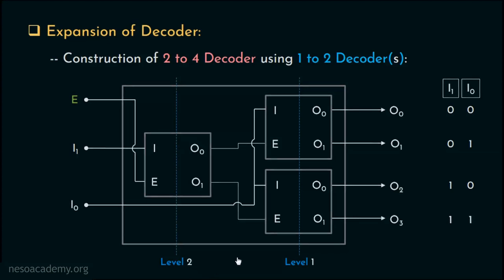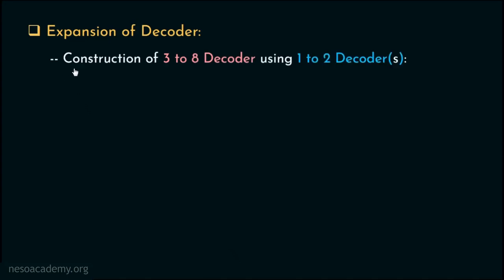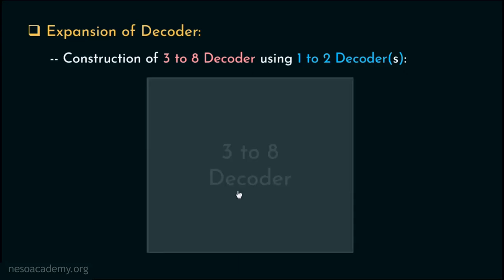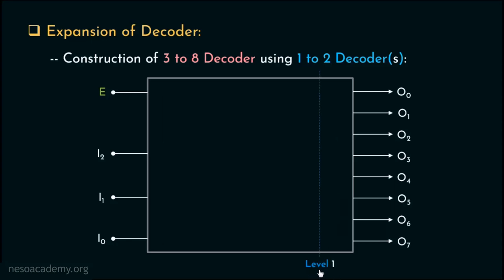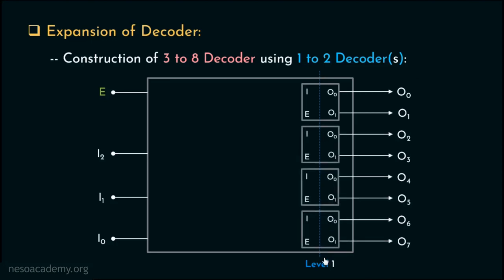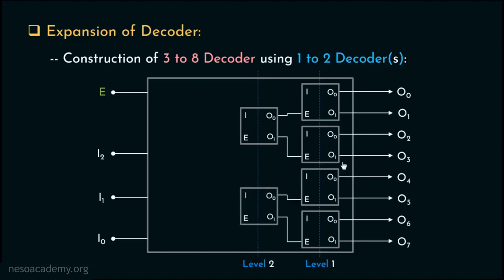Let's construct a 3-to-8 decoder using 1-to-2 decoders. For a 3-to-8 decoder, there will be one enable line, three input lines and eight output lines. We begin construction from level 1. There are eight output lines and one 1-to-2 decoder can cover only two lines — hence we will need four 1-to-2 decoders to cover all eight lines. In level 2, we need decoders to control the enable lines of the level 1 decoders: one decoder for the enable lines of two decoders and another for the other two, giving us two more 1-to-2 decoders for level 2.